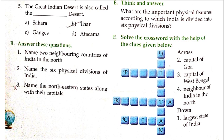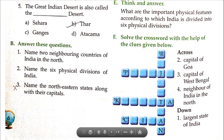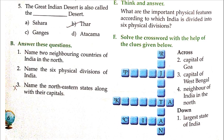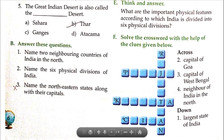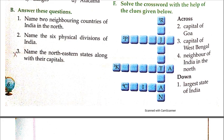Solve the crossword with the help of the clues given. Number 2: Capital of Goa — the answer is Panaji, so you will fill in Panaji. Number 1: Largest state of India — the answer is Rajasthan, fill it in going downward. Number 3: Capital of West Bengal — the answer is Kolkata. Number 4: Neighbor of India in the North — the answer is China. You can check spellings in your textbook or ask your parents.